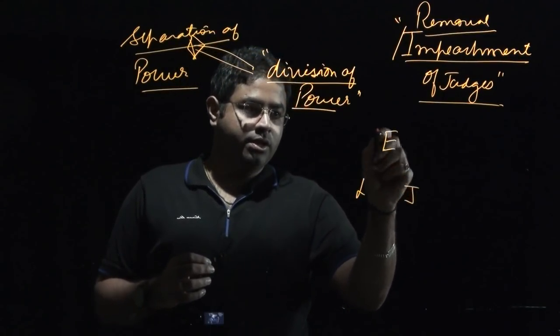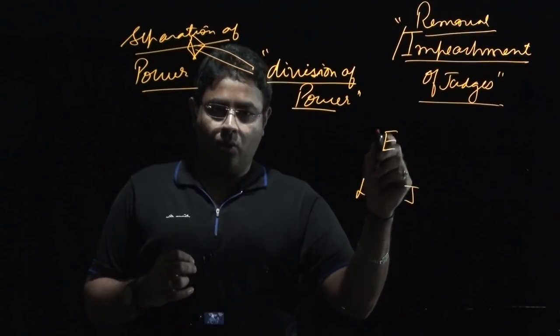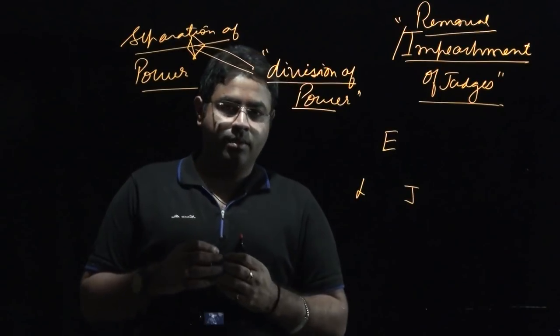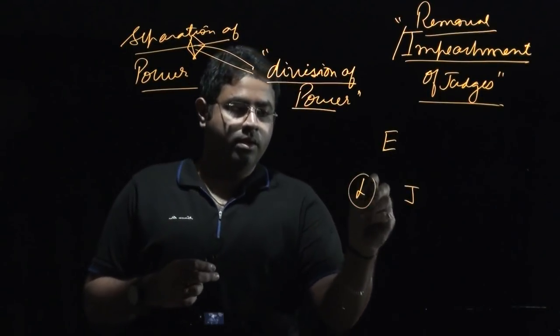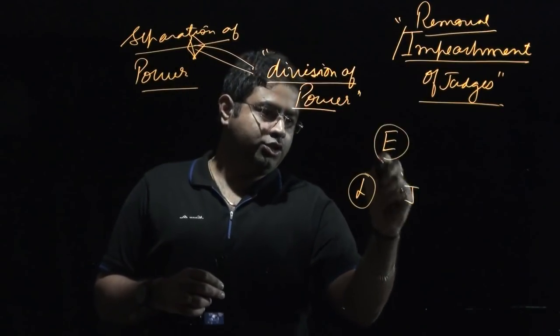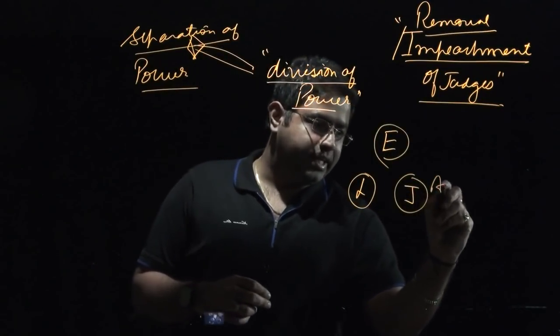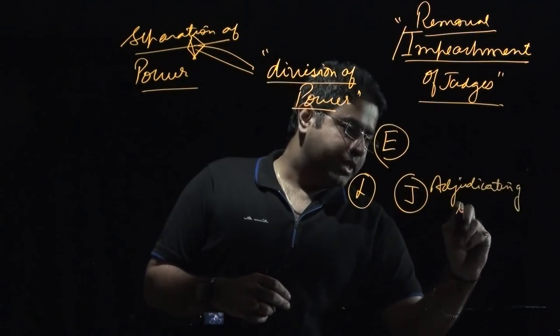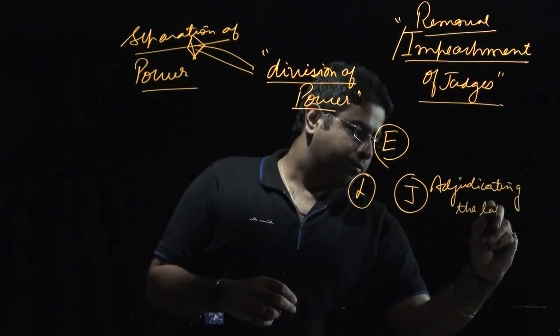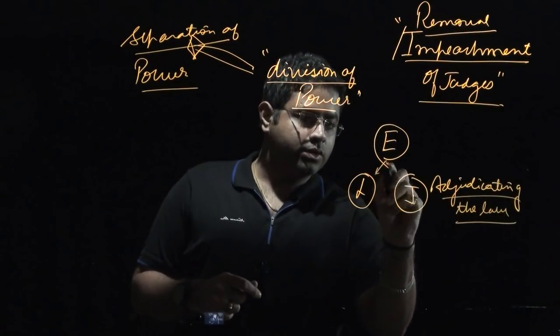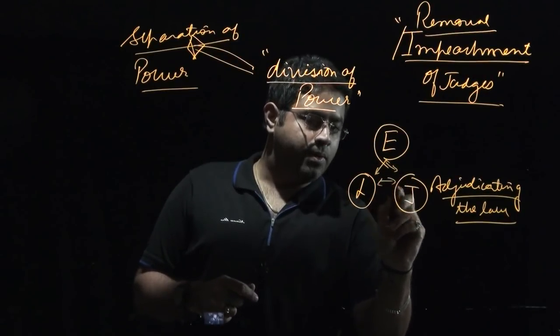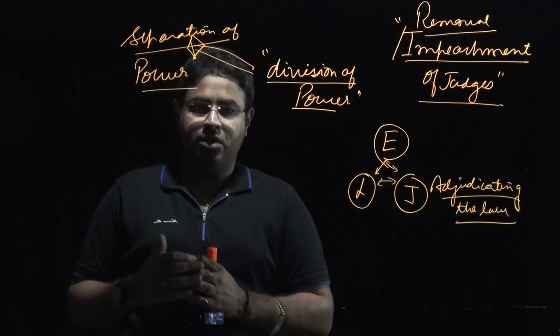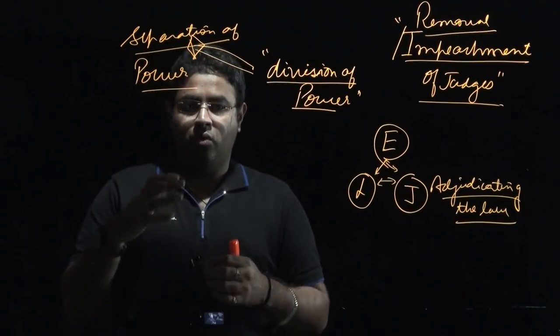The executive should confine its role only to the implementation of policies. The policies and the law should come from the legislature, and the judiciary should only be adjudicating the law. This is the principle of separation of power, which doesn't allow one organ of the state to have more power in comparison to the other organs.